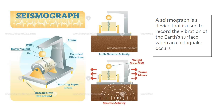A seismograph is a device used to record the vibrations of the Earth's surface when an earthquake occurs. It has a weight with a pen attached to it, so when an earthquake happens and the device shakes, the pen creates a drawing called a seismogram — the drawing that shows us the vibrations of the earthquake so we can process it for further information.